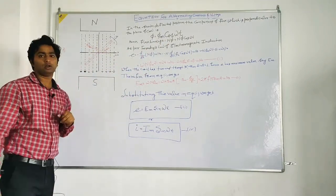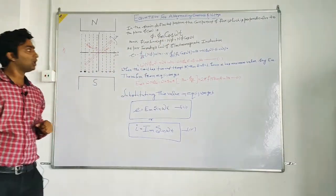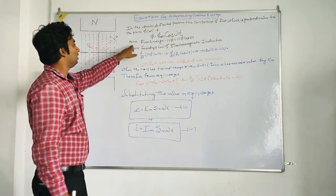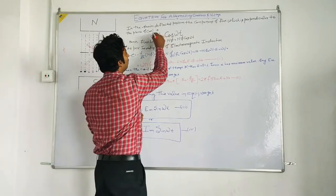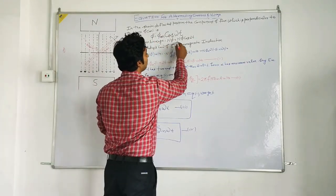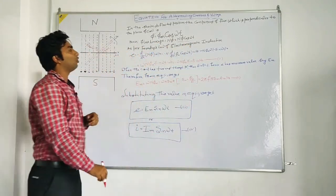Now as we know the induced emf depends upon the number of turns. Hence the flux linkage is n phi. So let us put the value of phi in this equation. So it will become n phi cos omega t.